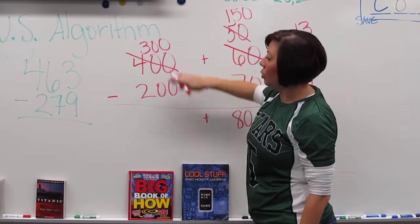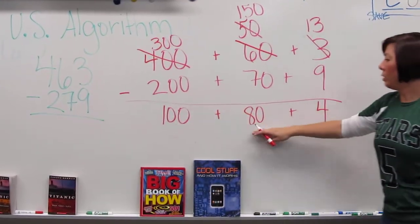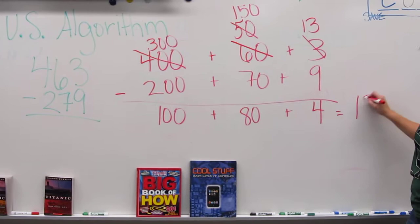Then they're going to take 300 minus 200 gives them 100. 100 plus 80 plus 4 equals 184. And that's their answer.